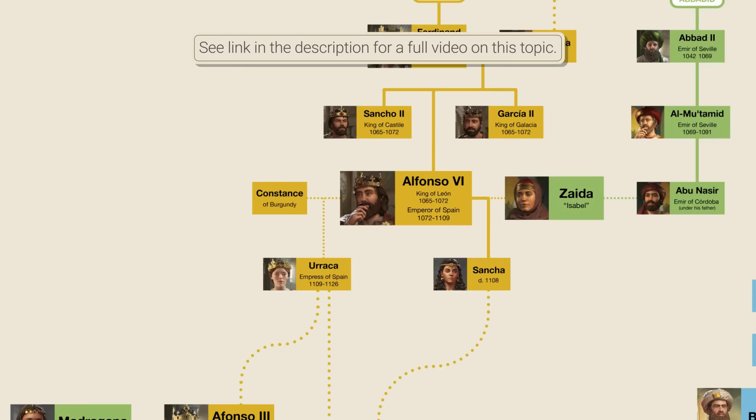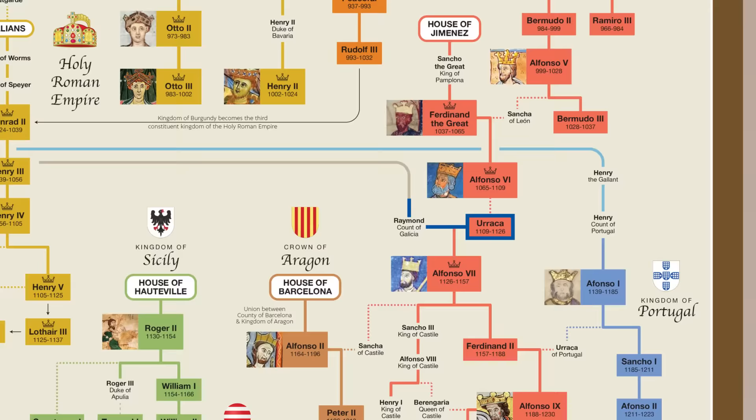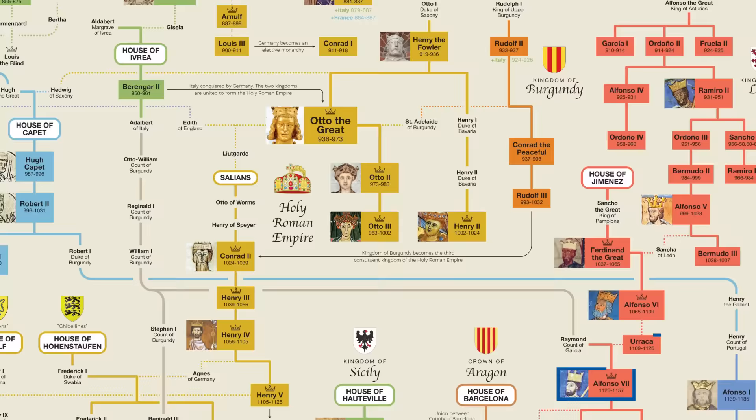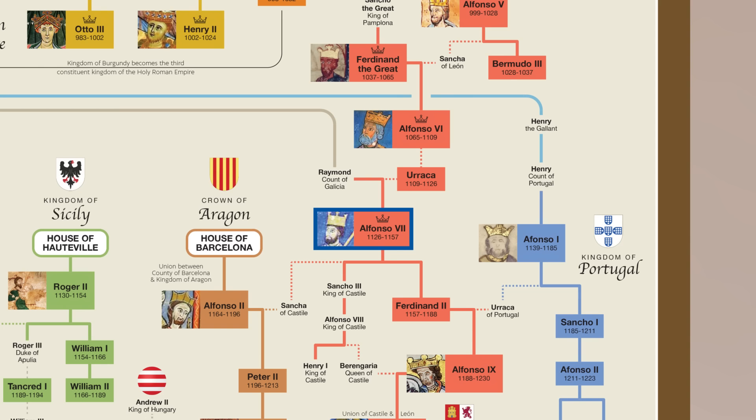Alfonso VI was followed by his daughter, Empress Urraca, who was the first female monarch in Spanish history. She married Raymond from the House of Burgundy in Italy, also known as the House of Ivrea. Their son, Alfonso VII, was hence a member of the Castilian House of Burgundy. He may also have used the title Emperor of the Two Religions, referring to both the Christian majority in his realm and the significant Muslim minority, although scholars are divided on the authenticity of this claim.